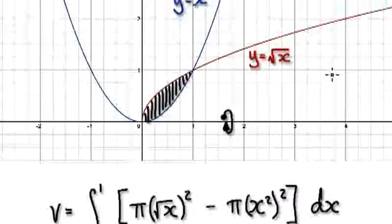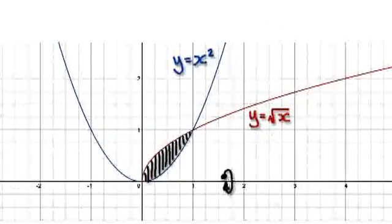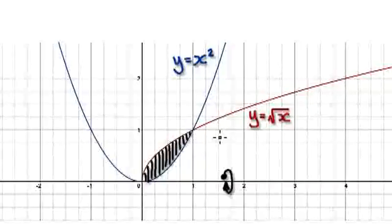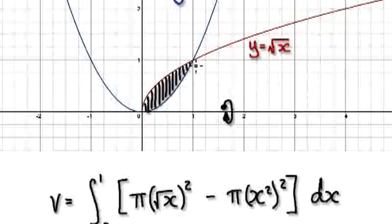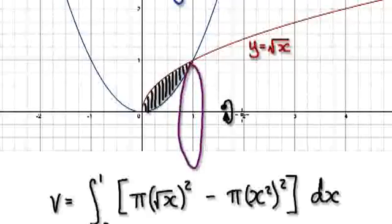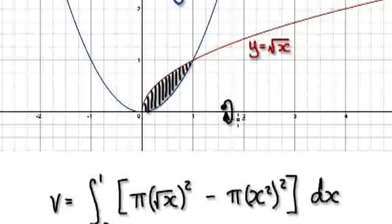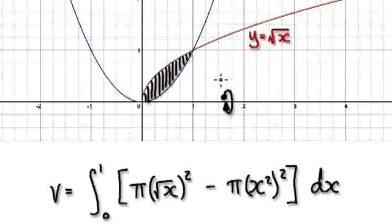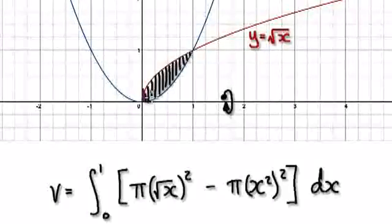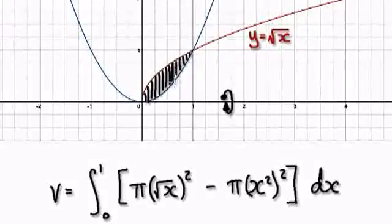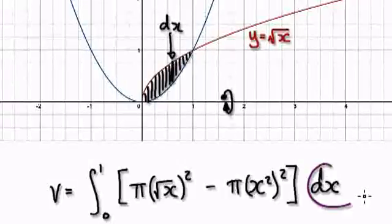So now let's rotate it along the x-axis. So we are now going to rotate it along the x-axis — it's going to look something like this. We are moving in the x direction. And the thickness associated with this one particular washer here would be dx — the thickness is dx.